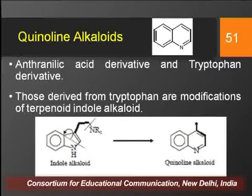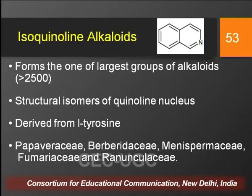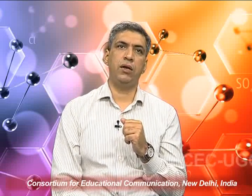Isoquinoline alkaloids have an isoquinoline nucleus in their structure. Compared to quinoline, the nitrogen atom shifts from the para to the meta position, so isoquinoline alkaloids can be considered isomers of quinoline alkaloids. They form one of the largest groups of alkaloids, with more than 2500 identified and isolated from nature. These alkaloids are derived from the amino acid L-tyrosine and are distributed among various dicotyledonous families such as Papaveraceae, Berberidaceae, Menispermaceae, Fumariaceae, and Ranunculaceae.